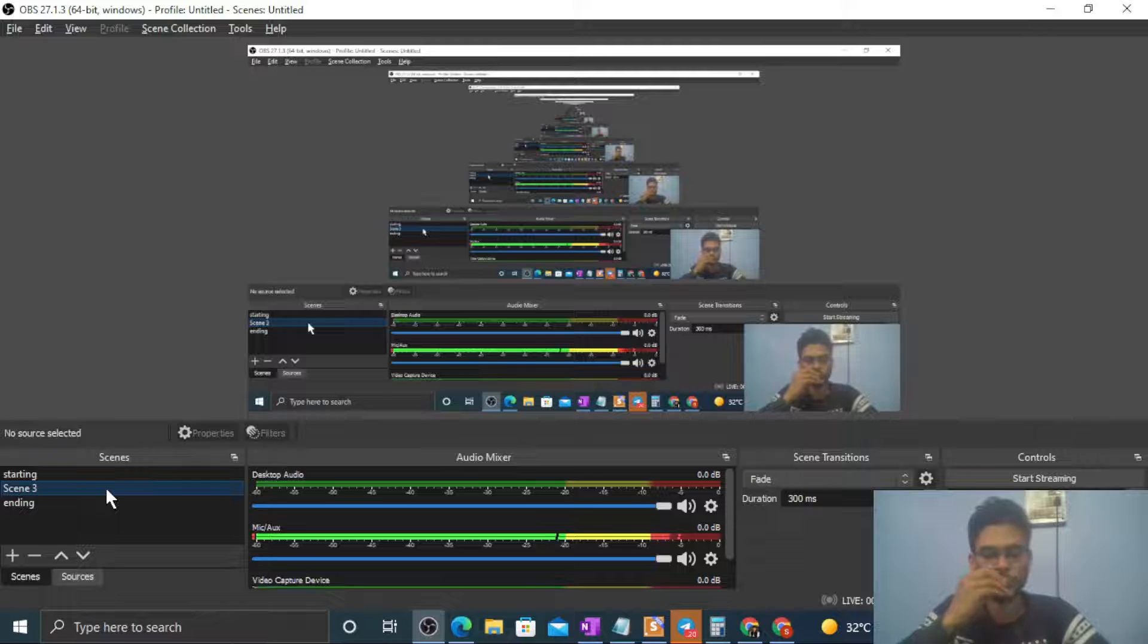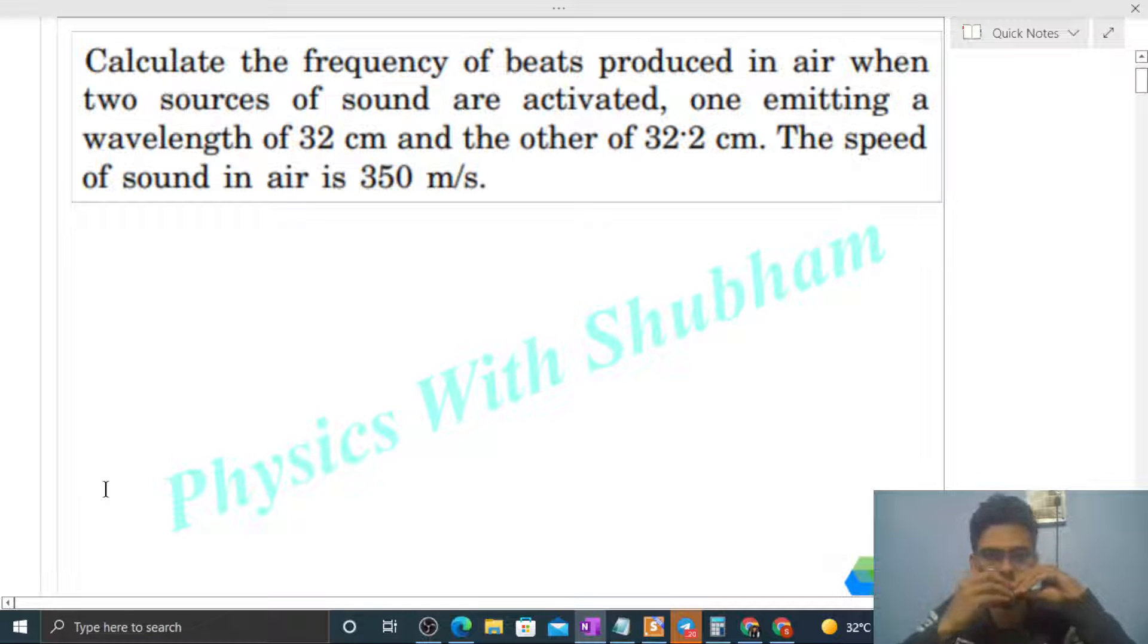Okay, hi everyone. So today let's discuss one interesting problem. It says: Calculate the frequency of beats produced in air when two sources of sound are activated, one emitting a wavelength of 32 centimeter and the other of 32.2 centimeter.